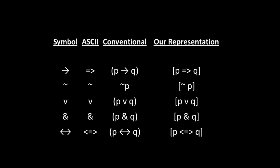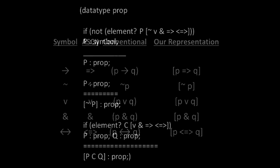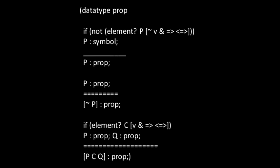Defining the syntax now requires defining the data type prop in Shen. Our first rule states that we can deduce P as a prop if we can deduce that P is a symbol which is not a logical constant. The second rule states that not P is a prop just when P is a prop. And the third rule deals with the binary connectives. P, C, Q is a prop just when C is a logical connective and P and Q are props.